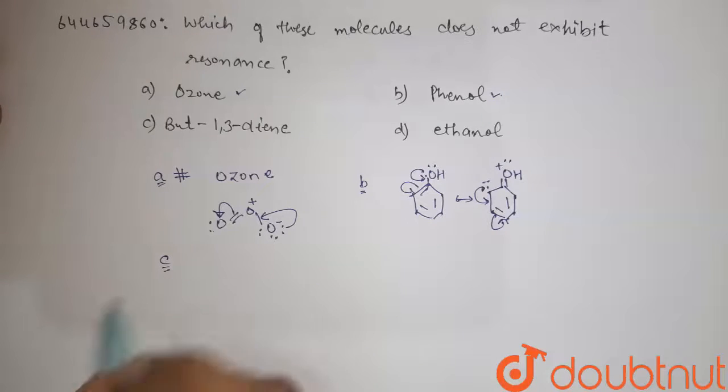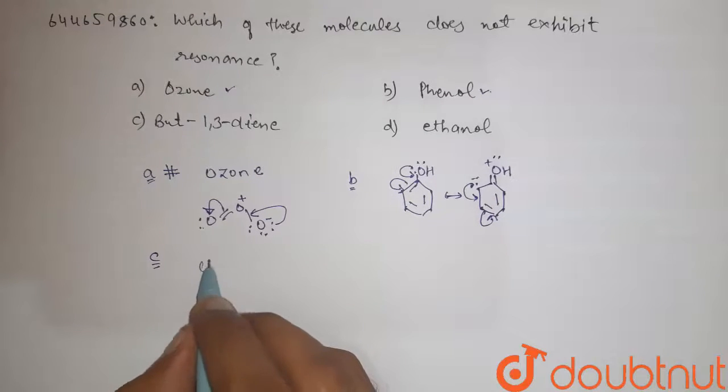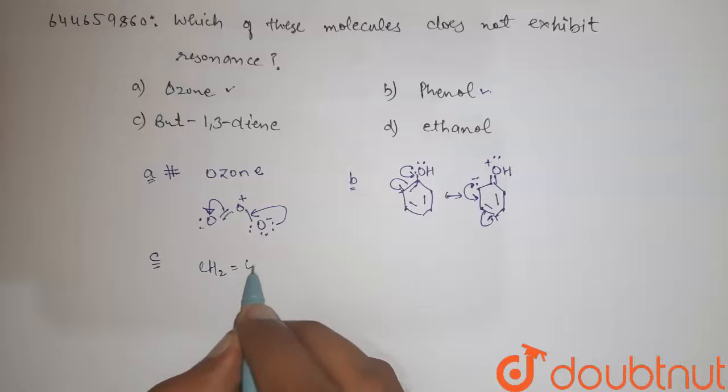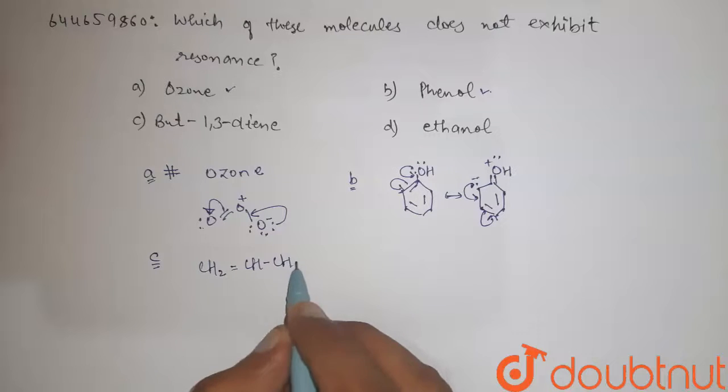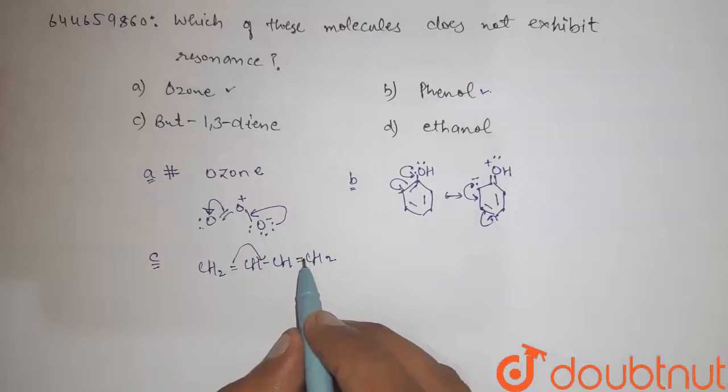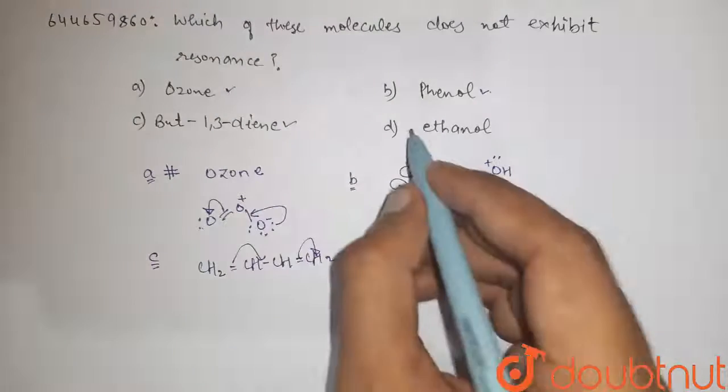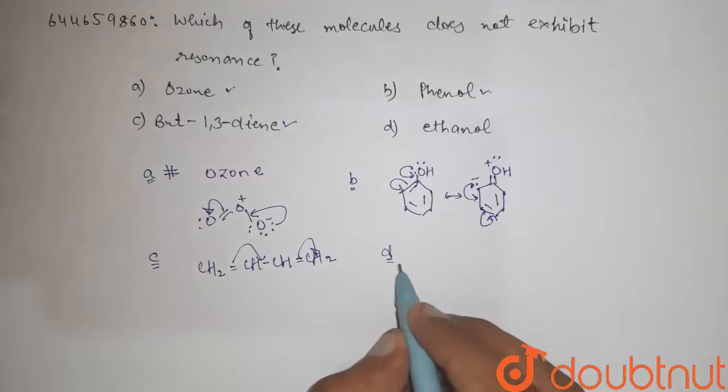Now option C, but-1,3-diene, that is CH2 double bond CH single bond CH double bond CH2. Similarly, the conjugation takes place. So in this case also, resonance takes place.